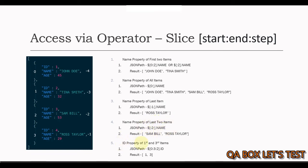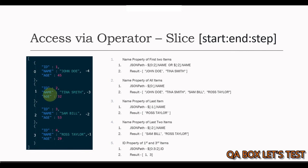The last example shows how to use the third parameter, step. To find the id property of the first and third items, we increment the step from one to two. We say starting index 0, ending index 3 (which is exclusive, pointing past the third item), and step 2. So starting from index 0, it skips index 1 and moves directly to index 2. This way we find the id property of the first and third items.